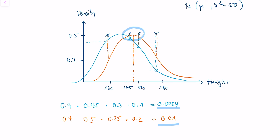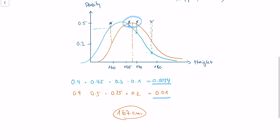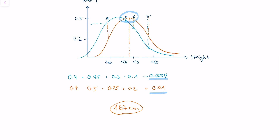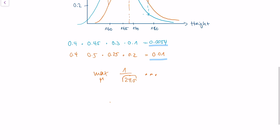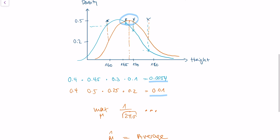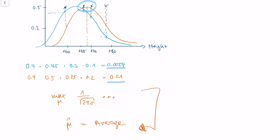The orange density curve corresponds to a mu of 167 centimeters. This is the intuition — we find the curve that fits perfectly. You can actually do this with math: you put up the density function of the normal distribution, which is 1 divided by the square root of 2π times sigma, and so on, and you maximize it with respect to mu. What you'll find is that the formula for our maximum likelihood estimator is actually the average. For the detailed math, there are other great YouTube videos I will recommend in the description.